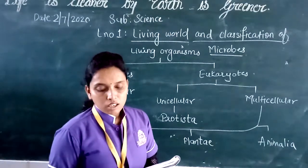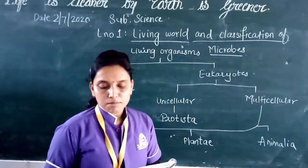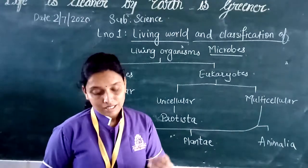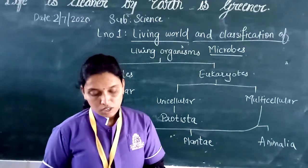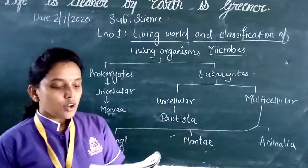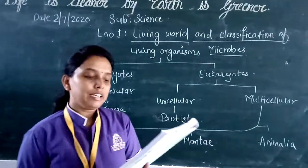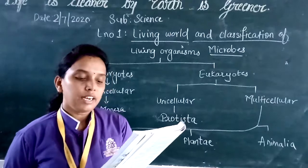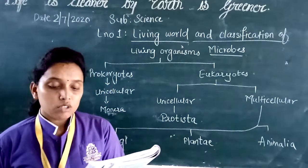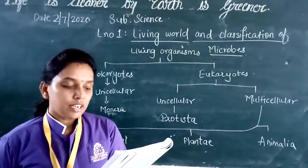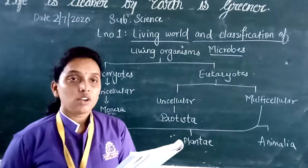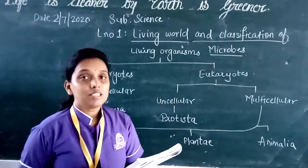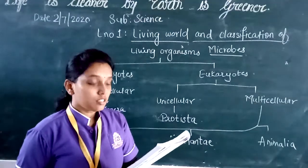In 1938, Copeland divided living organisms into four kingdoms: Monera, Protista, Plants, and Animals. Robert Harding Whittaker, an American ecologist who lived from 1920 to 1980, in 1969 divided living organisms into five groups, and till now this classification is widely accepted.